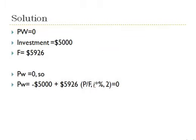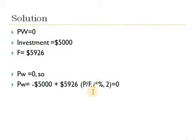The first step in the calculation of IRR is always setting the present worth equal to zero, because I want to find the interest rate at which inflows equal outflows. I will get the present value of the inflows and outflows and set it equal to zero to calculate the interest rate. We have an investment of $5,000, already on the present, so I don't multiply it with any factor. And I have the $5,926, which is the future value, two periods away. So I get its present value by saying P equals F times (P/F, I, 2), where I is unknown.